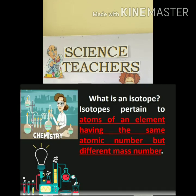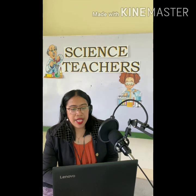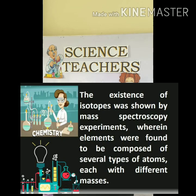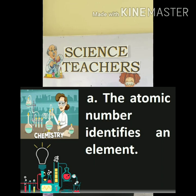Isotopes pertain to atoms of an element having the same atomic number but different mass number. Don't be confused — atomic number is different from mass number. The existence of isotopes was shown by mass spectroscopy experiments, wherein elements were found to be composed of several types of atoms, each with different masses. We know that the atomic number identifies an element.